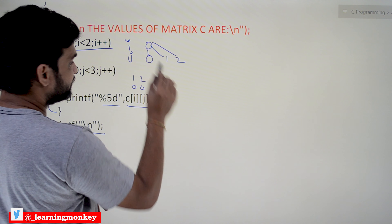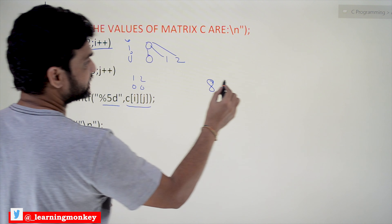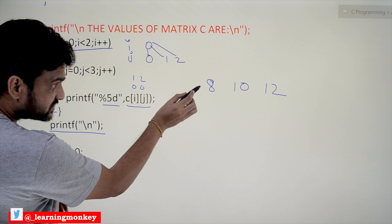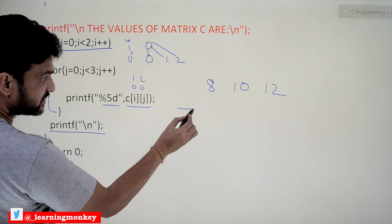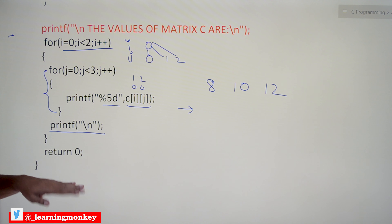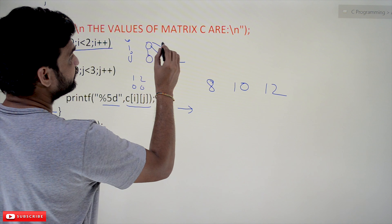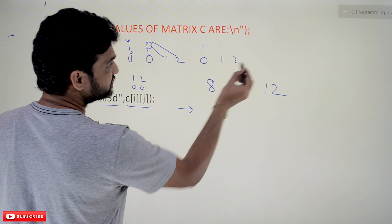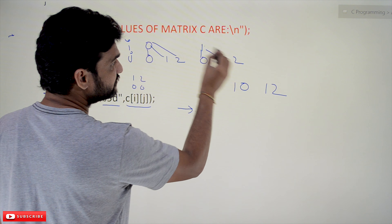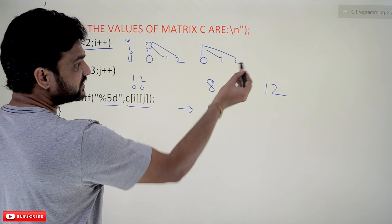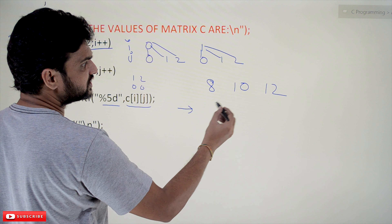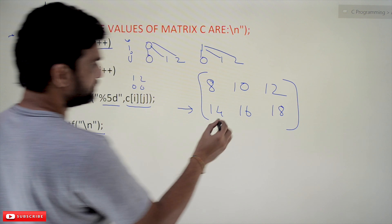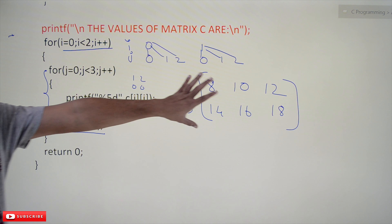In the first iteration, with i equal to 0, the inner loop iterates for j = 0, 1, 2, displaying C[0][0]=8, C[0][1]=10, and C[0][2]=12. After this, a line break is taken. Then i equals 1 and j iterates again for indices [1][0], [1][1], [1][2], displaying values 14, 16, and 18.